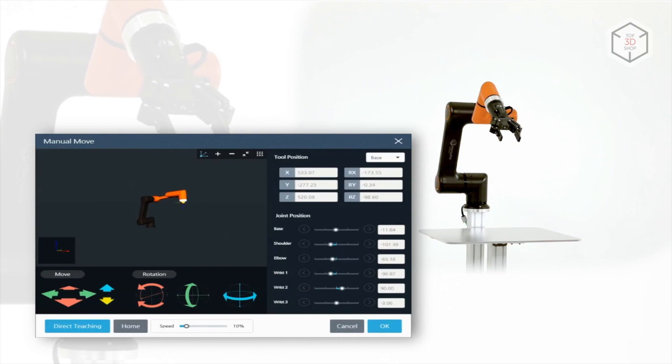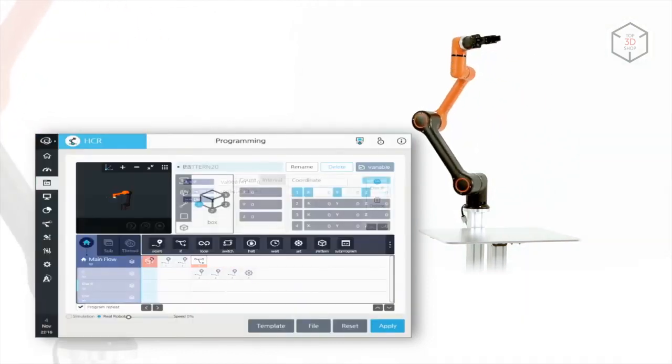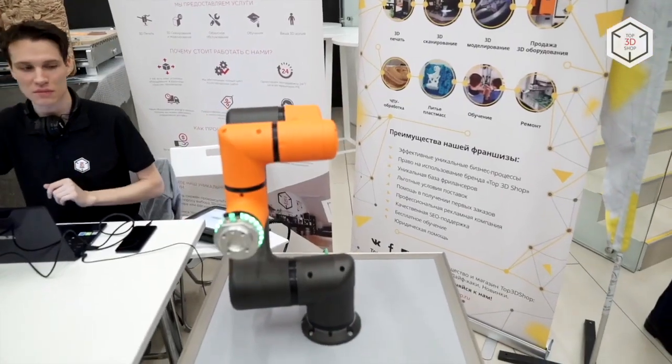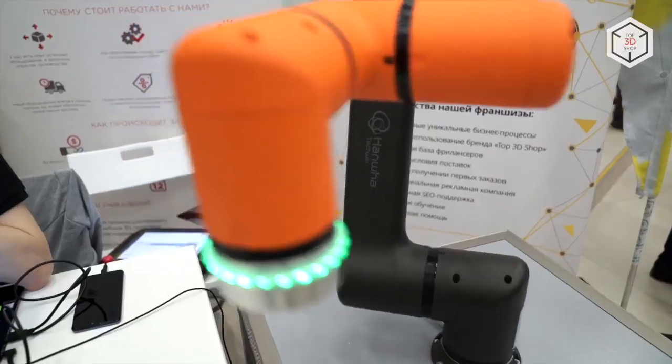Our certified engineers will help you integrate collaborative robots into production lines of any complexity. Top 3D shop specialists carry out a full automation cycle, from feasibility study to start-up and adjustment, training, service and post-warranty maintenance.